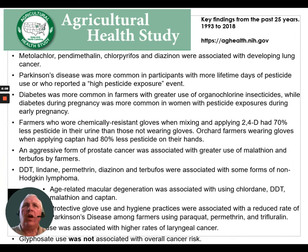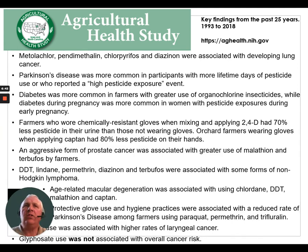This is from an agriculture health study with findings from 25 years of research, from 1993 to 2018. Metolachlor, chlorpyrifos, and diazinon were associated with developing lung cancers. Parkinson's disease was more common in participants with more lifetime days of pesticide use who reported a high-exposure event — meaning they had a spill and got a lot on them. Diabetes was more common in farmers with greater use of organochloride insecticides, while diabetes during pregnancy was more common in women with pesticide exposures during early pregnancies.